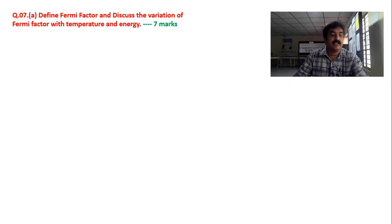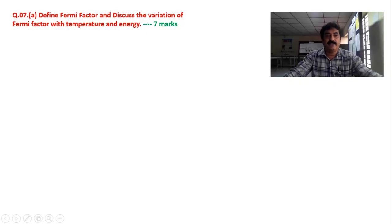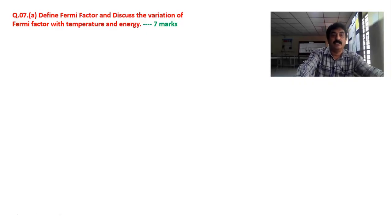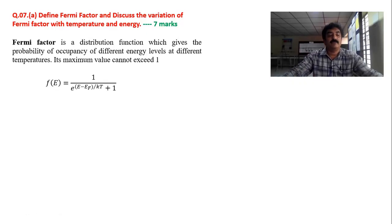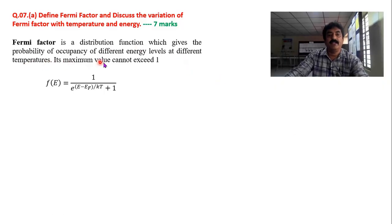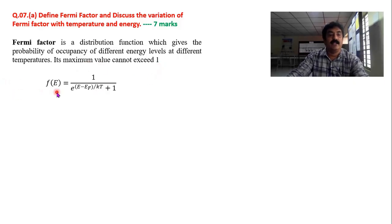This question is on the calculation of Fermi factor: define Fermi factor and discuss the variation of Fermi factor with temperature. Fermi factor is defined as the distribution function which gives the probability of occupancy of different energy levels at different temperatures. Its maximum value cannot exceed 1, that is 100%.